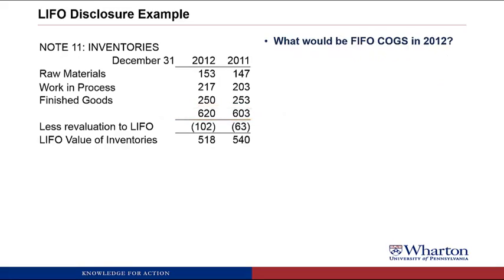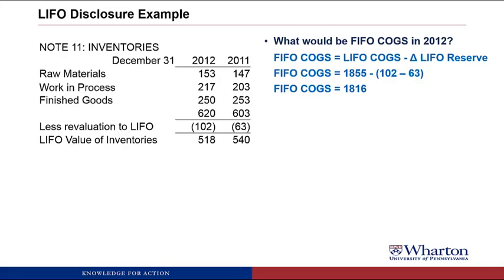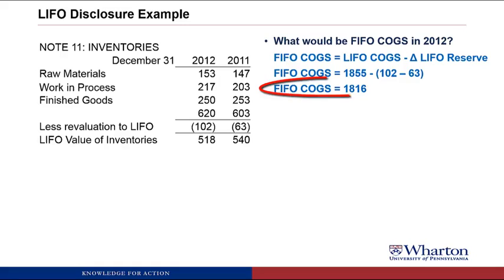Next, we want to figure out what cost of goods sold would have been under FIFO during 2012. The equation is: FIFO COGS equals LIFO COGS minus the change in the LIFO reserve. LIFO COGS was 1,855. The change in the LIFO reserve is 102 minus 63. These are both positive numbers, so we just take the difference. FIFO COGS would be 1,816 — that's 39 less than the LIFO COGS, and that 39 is the change in the LIFO reserve.